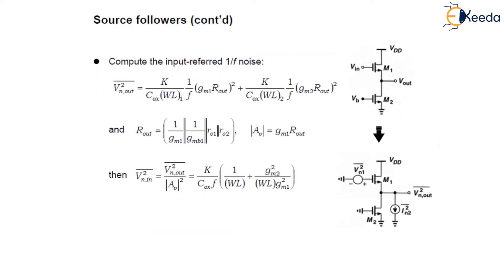Now let us calculate the input referred 1/f noise, that is flicker noise. The output flicker noise can be calculated as Vn²_out = (K / Cox·WL1) · (1/f) · (gm1·Rout)² + (K / Cox·WL2) · (1/f) · (gm2·Rout)², where Rout = 1/gm1 ∥ 1/gmb1 ∥ Ro1 ∥ Ro2.